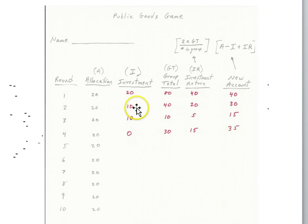Well suppose you invest ten and it so happens that the other three players also invest ten. That would give you a group total of forty. Forty times two is eighty divided by four is twenty. So your new bank account is going to be thirty. All right, so twenty minus the investment of ten. So twenty minus ten plus twenty is going to be thirty.